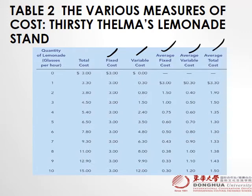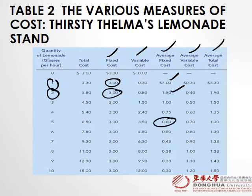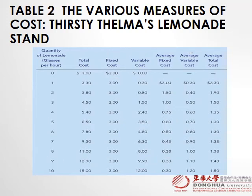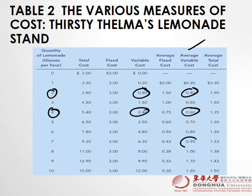If we have variable cost and fixed cost, can we find average cost? Yes. Average fixed cost: 3 divided by 1 is 3; 3 divided by 5 is 0.6; 3 divided by 9 is 0.33. For average variable cost: 0.40 came from variable cost 0.8 divided by quantity 2; 0.6 came from 2.4 divided by 4; 0.9 came from 6.3 divided by 7.